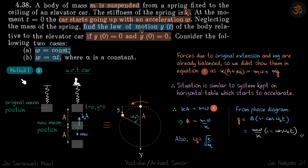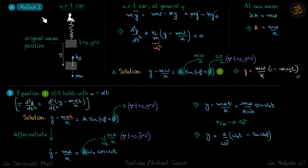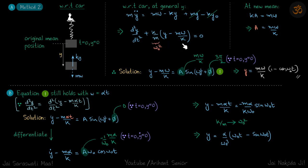Now let's see the mathematical way of arriving at the same answer — Method 2. The block has moved down a distance Y from its original position, so it has a restoring force KY upward and pseudo force MW downward. Of course, there are also forces Mg and KX₀, but they cancel. Taking downward as positive, M·Ÿ = MW - KY, or d²Y/dt² + (K/M)(Y - MW/K) = 0. This is an equation of SHM where K/M = ω₀² and MW/K is the new mean position. The general solution is Y - MW/K = A·sin(ω₀T + φ).